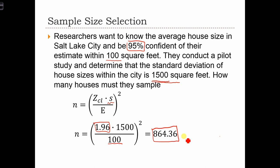So in order to guarantee that we can be 95% sure about our house size estimate, within 100 square feet of error, we're going to need to sample at least 864.36 respondents, or n is going to have to be equal to 865.